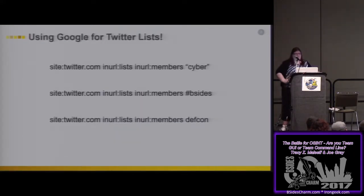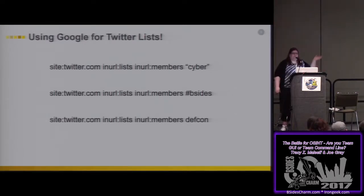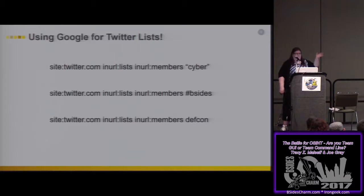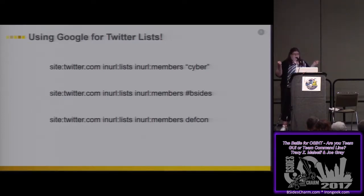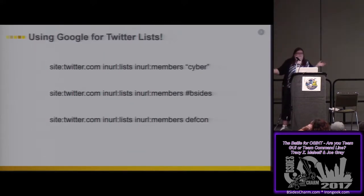What if you want to find a list to follow? Because Twitter loves to mess with us, they disabled the feature to search for lists in their own Twitter client. So you have to go to Google. These are ways to find lists: tell it you want site:Twitter.com with the word "lists" in the URL and "members," if you're looking at members of a certain list. Then add your qualifier — do you want it to have "cyber" in it? You can use with or without quotes, or use a hashtag. That will bring up lists describing that word or hashtag. You have to go to Google to find Twitter lists.